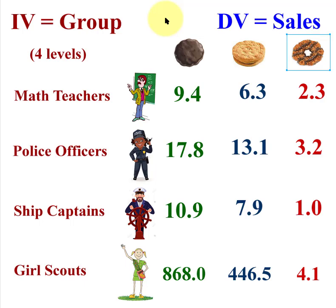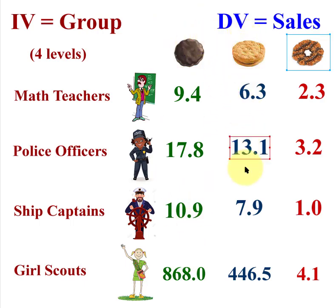The first omnibus result doesn't tell you where the difference is. That's when you scroll down in your SPSS output and look at each individual DV listed. What you're going to see is a significant difference in the Thin Mint variable and the peanut butter variable, but not in the Samoa. That's how a MANOVA works, and overall the MANOVA result would be significant.